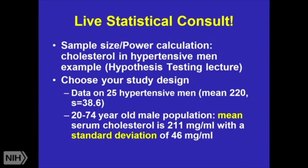This isn't from this year's hypothesis testing lecture, because Paul gave it last week instead, but I'm going to talk about an example of cholesterol in hypertensive men. Let's say you have data on 25 hypertensive men — mean total cholesterol of 220 and a sample standard deviation of 38.6. In national population data for 20 to 74-year-old males, the mean serum cholesterol is 211 with a standard deviation of 46. The question is: is their cholesterol different from the average population?